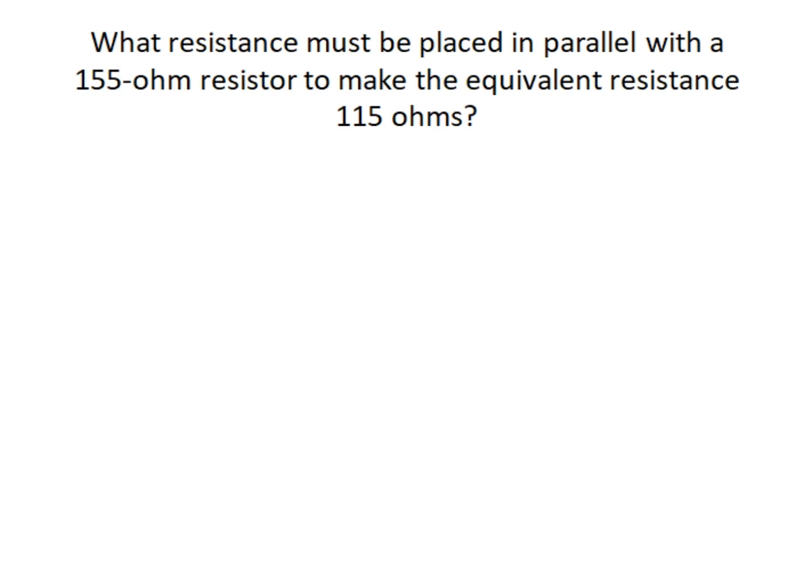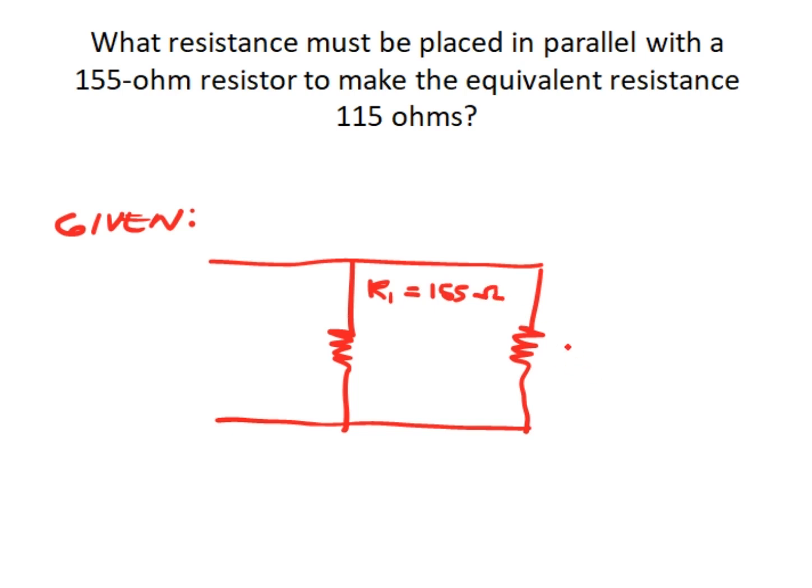Let us first draw our circuit. So this is our circuit. We have two resistors in parallel. This is R1 equal to 155 ohms, and this is R2.